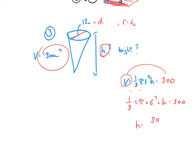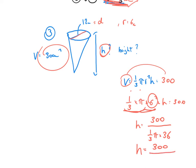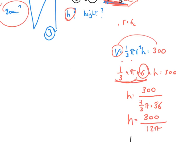I bring one third pi times 6 squared down and divide, giving h equals 300 over one third of pi times 6 squared. Evaluating: 6 squared is 36, and one third of 36 is 12, so that simplifies to 300 over 12 pi. Entering that into the calculator, to one decimal place, the final answer is 8.0 centimetres.